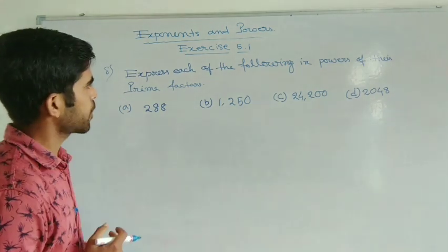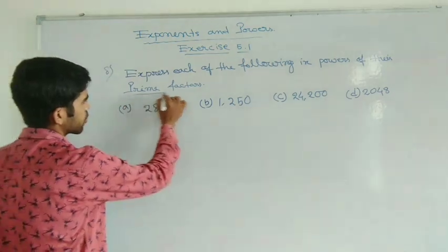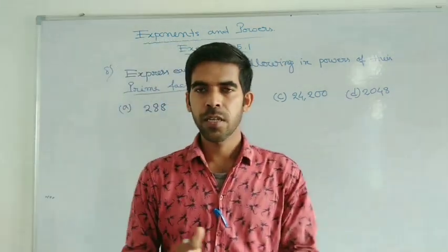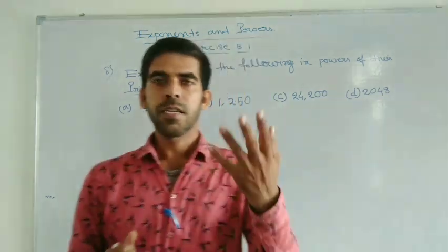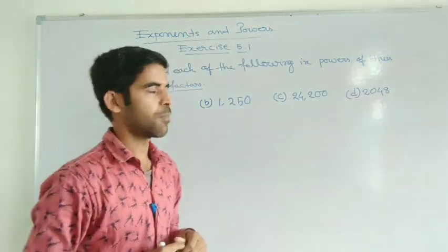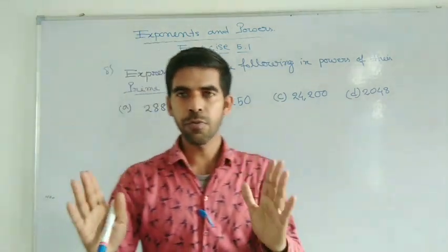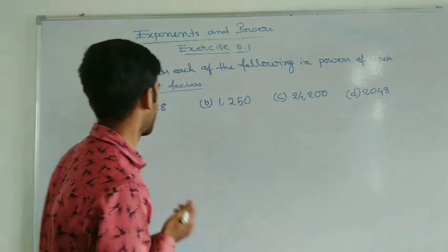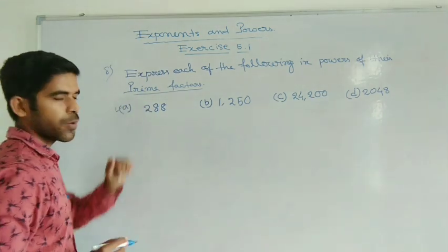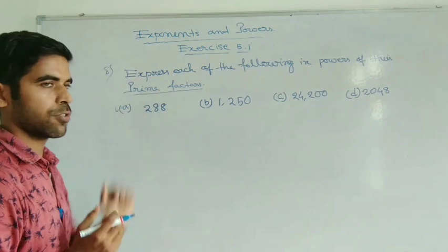Express each of the following in powers of their prime factorization. You know what the prime numbers are — if any number's factors are only 2 then this number is called a prime number. So these things you already learned in class 4, 5, 6. They are given one number: 288.